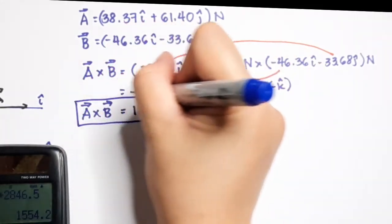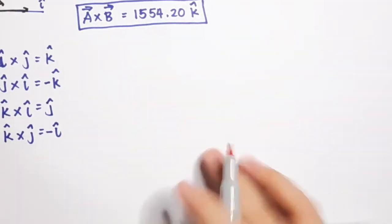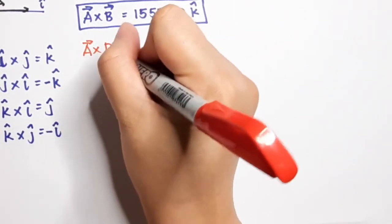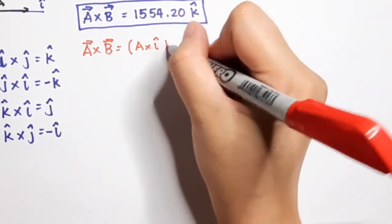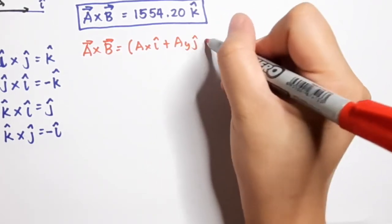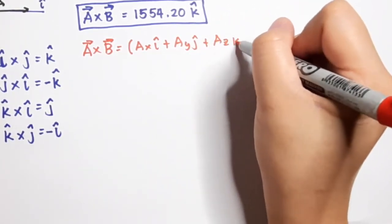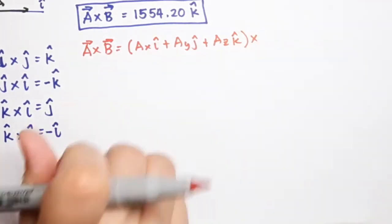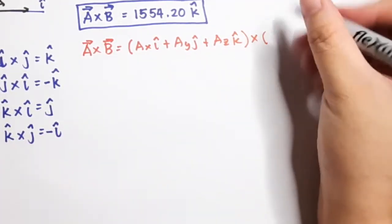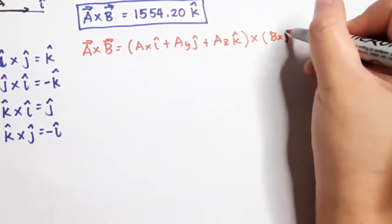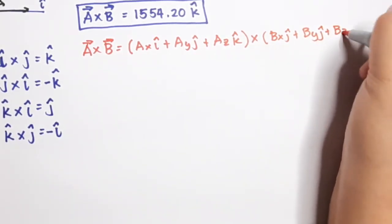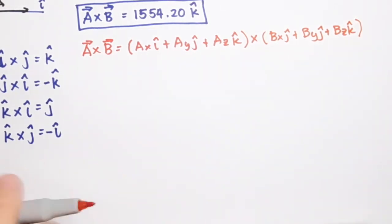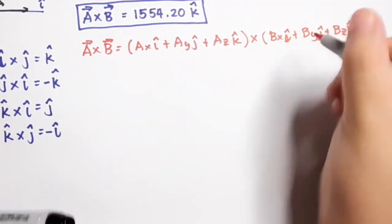Looking at the general form: A cross B where A is Ax i-hat plus Ay j-hat plus Az k-hat, crossed with B which is Bx i-hat plus By j-hat plus Bz k-hat. We multiply only terms with different unit vector directions.